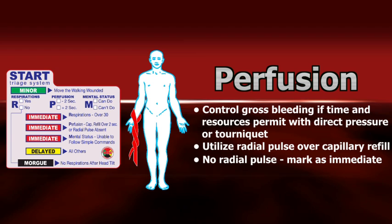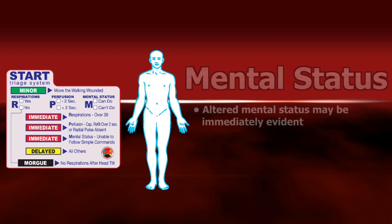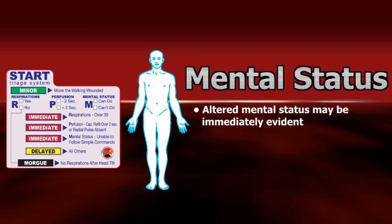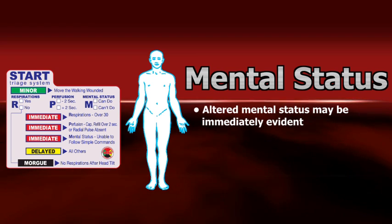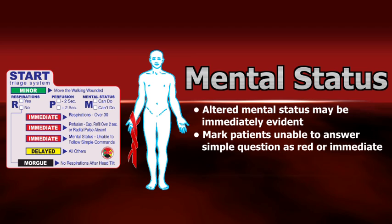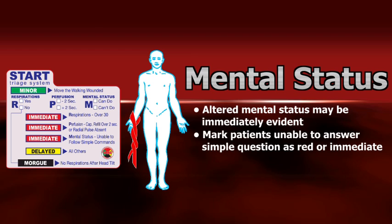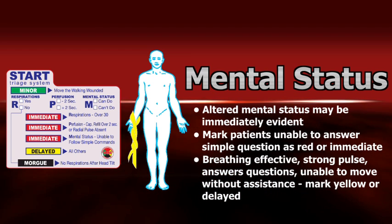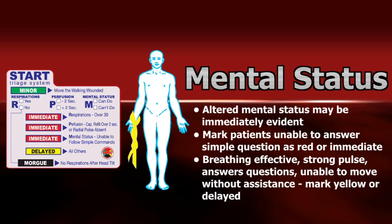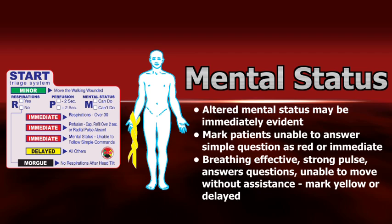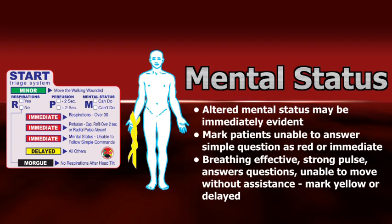If the patient has a radial pulse, the triage team member should next evaluate the patient's mental status. Once the triage team member has determined that the patient is breathing and perfusing, they can turn their attention to mental status. Many times the patient with an altered mental status will be evident at the start of the assessment. Patients who are confused and cannot answer simple questions should be tagged immediate or red. If the patient is breathing effectively, has a strong radial pulse, and answers all questions appropriately, but was not able to walk out of the immediate area with the walking wounded, tag the patient delayed or yellow. This patient most likely has an injury that is not life-threatening but will prevent them from moving.